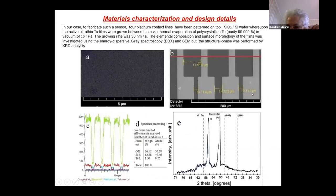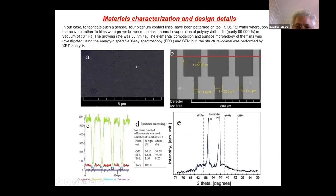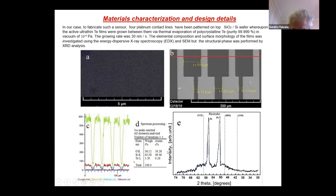The sensor was fabricated by growing the amorphous tellurium on platinum electrodes on a silicon substrate with silicon oxide buffer. This micrograph of the tellurium layer shows it is really in an amorphous state, confirmed also by the XRD pattern. EDX analysis shows the elemental composition. On this sensor, the tellurium layer is very thin, because the concentration of tellurium is only about 0.26 atomic percent.